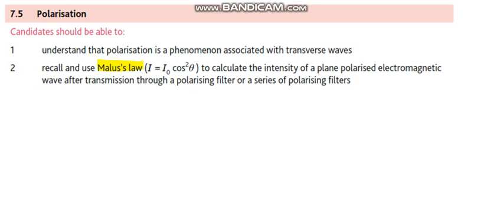The learning outcome says that understand that polarization is a phenomenon associated with transverse waves and the second part says recall and use Malus's law I equals I naught cos squared theta to calculate the intensity of a plane polarized electromagnetic wave after transmission through a polarizing filter or a series of polarizing filters. So we are expected to do calculations from 2, 3, or 4 polarizing filters.